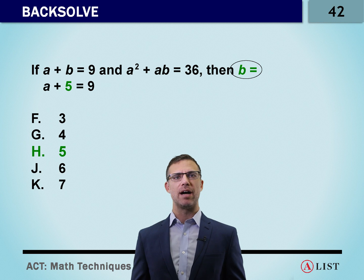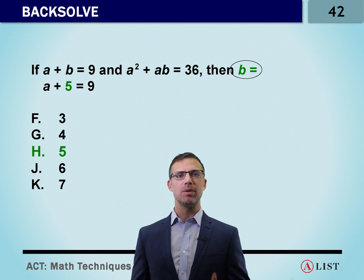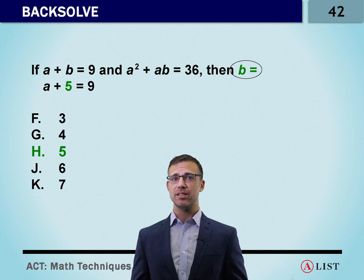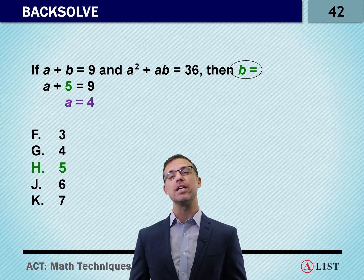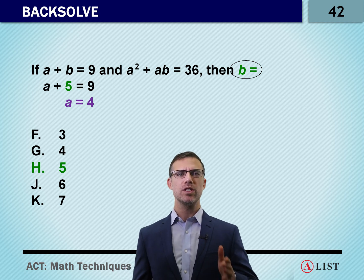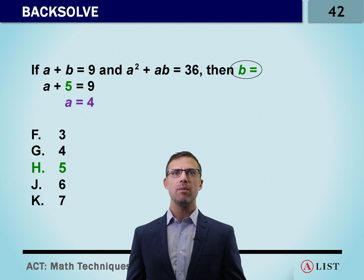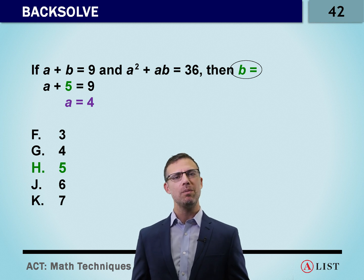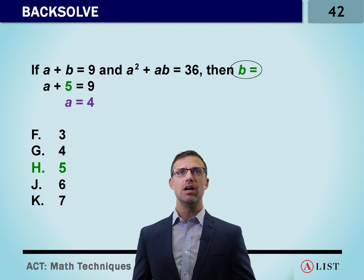Let's test out five. If B is five, then A plus five equals nine. Can we figure out what A is? A is going to equal four. Now we've solved one of the equations, but in order for this to work, it has to work for both parts. So we've got to take a look at the second equation. We know what B is and we know what A is.